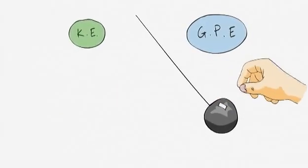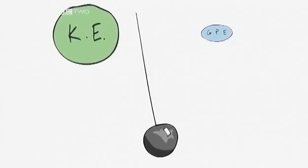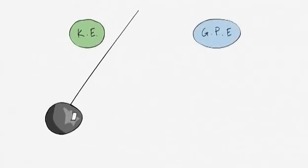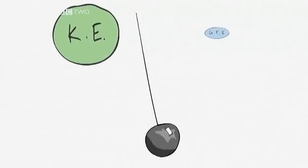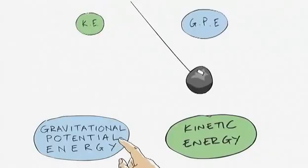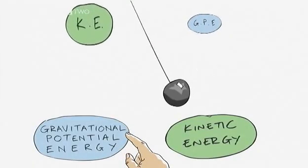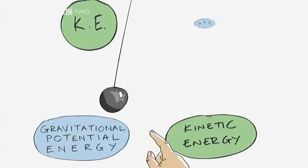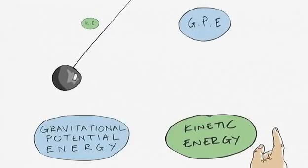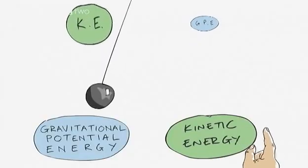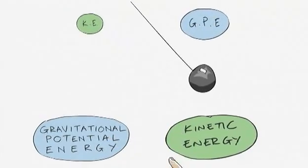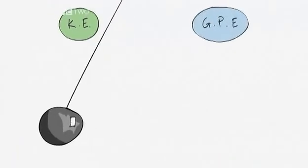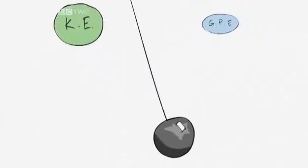Now we let the ball go. What happens to the energy? Well, as it falls, it loses height. So it loses gravitational potential energy. But it starts moving faster and faster, so it gains kinetic energy. As it swings back up higher, it gains gravitational potential energy again. But also, as it swings up, it slows down and loses kinetic energy. Over and over, the energy is transformed back and forth. Gravitational potential energy to kinetic energy. GPE-KE, GPE-KE, GPE-KE. You get the picture.